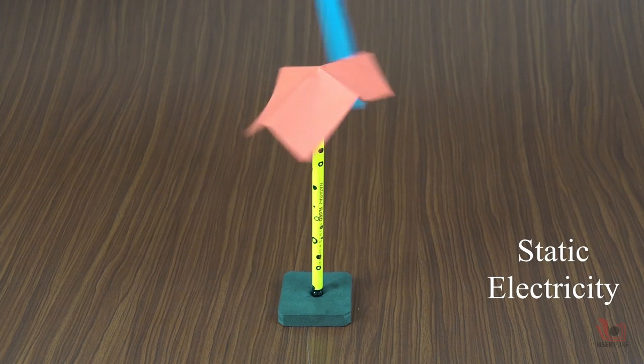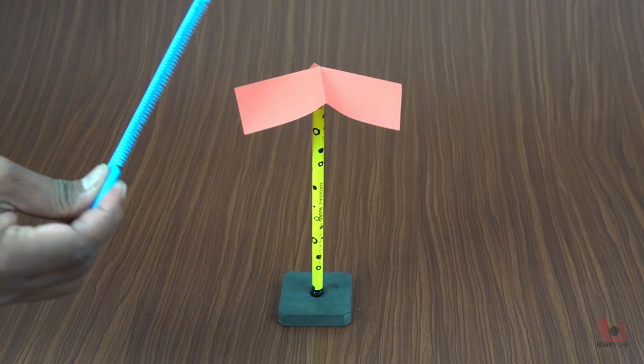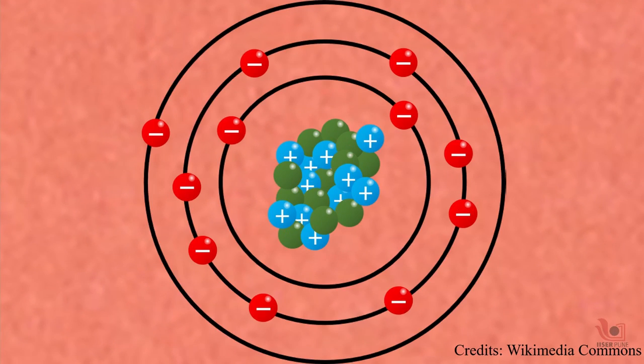Why does our paper rotate? It is due to static electricity. All materials contain millions of small particles called protons and electrons which have electric charges. Protons have positive charges and electrons have negative charges. Usually they balance each other in the objects, so most of the objects are neutral.